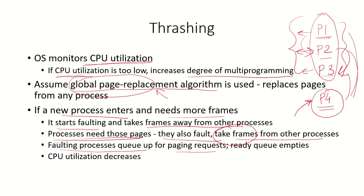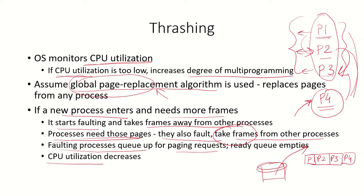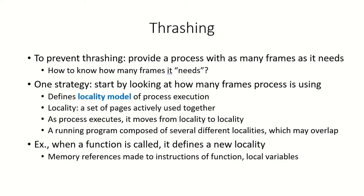The faulting processes will queue up for paging. P1, P2, P3, P4 are all in the queue for I/O, wanting to bring a page from the hard disk to memory. When most processes have lined up for paging, the CPU is again sitting idle and CPU utilization decreases. This becomes a cycle where the OS tries to increase the degree of multiprogramming again. This is called thrashing — when processes have multiple page faults due to lack of frames.